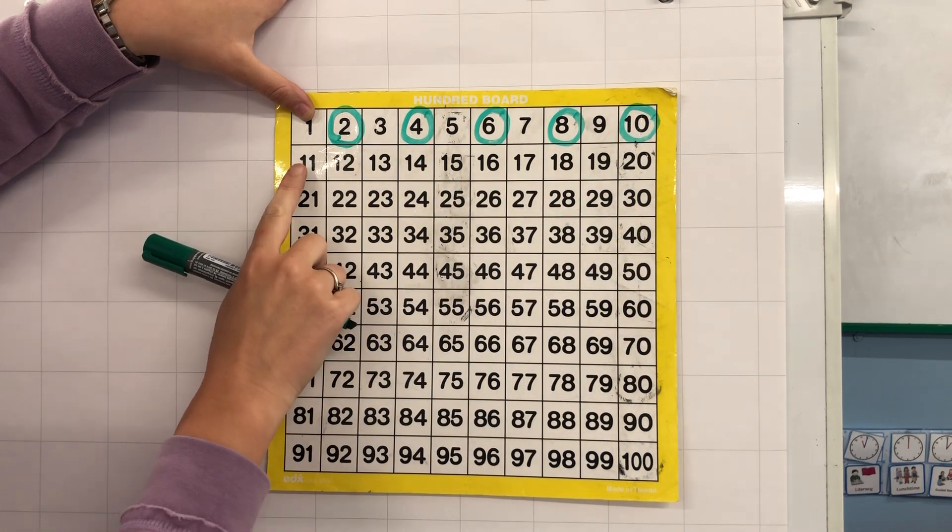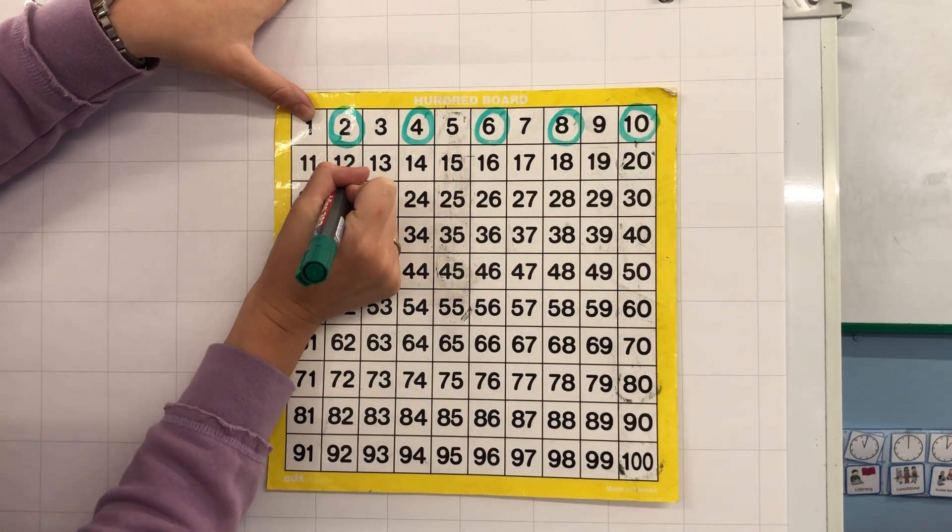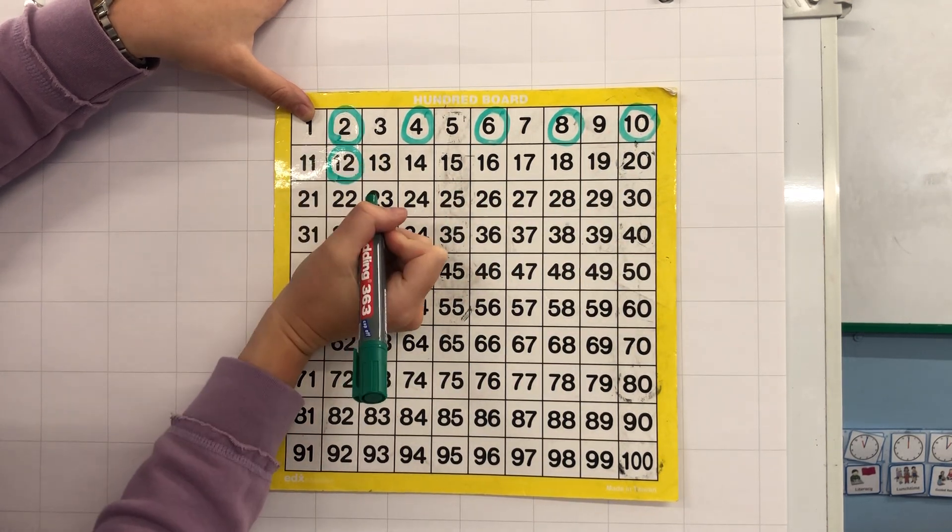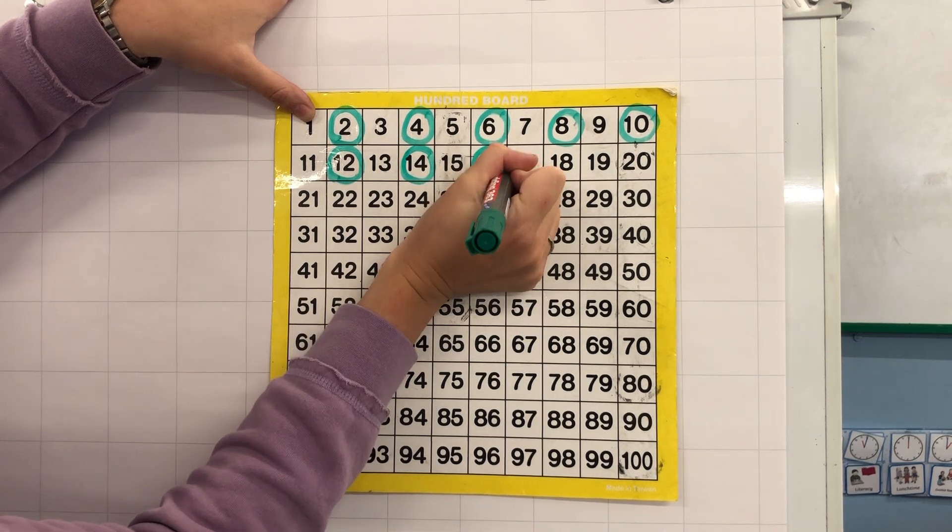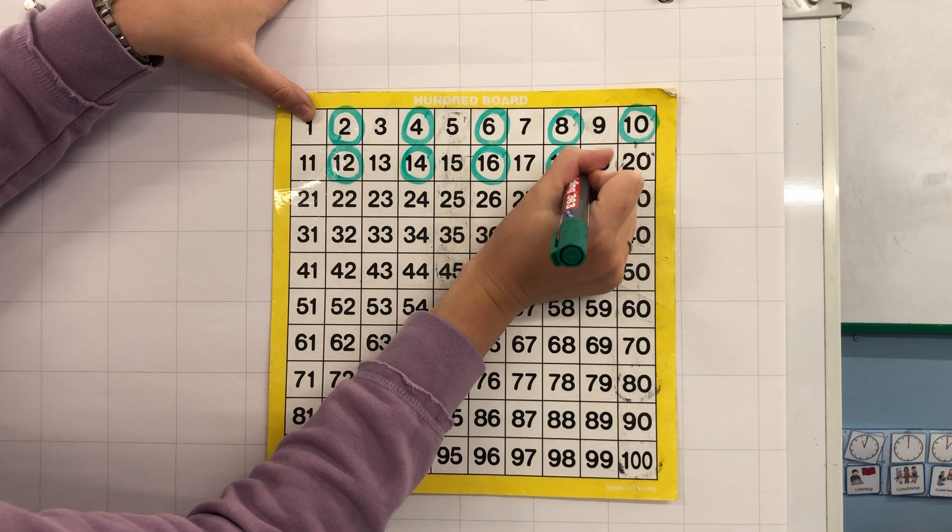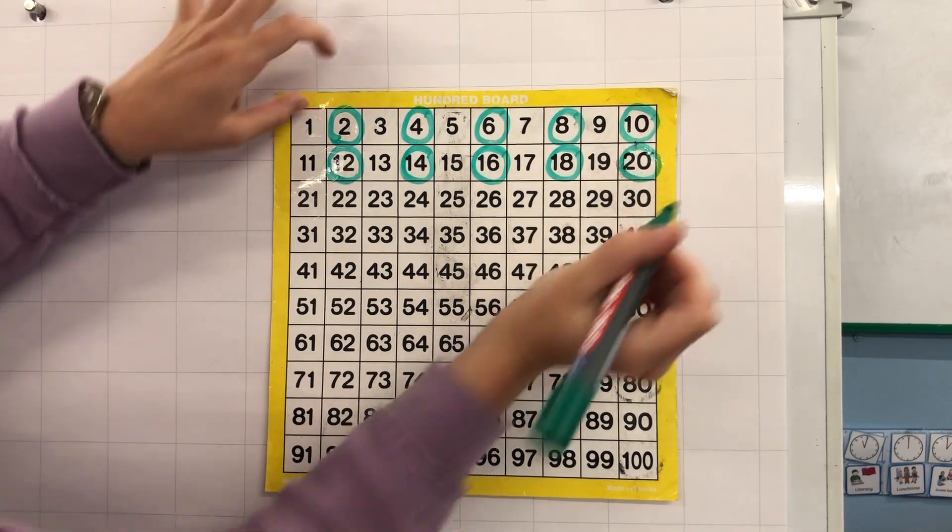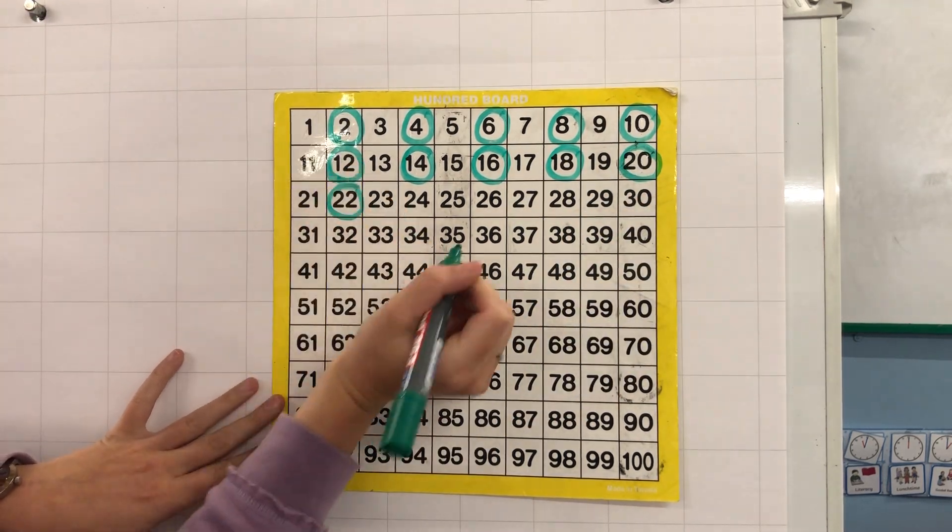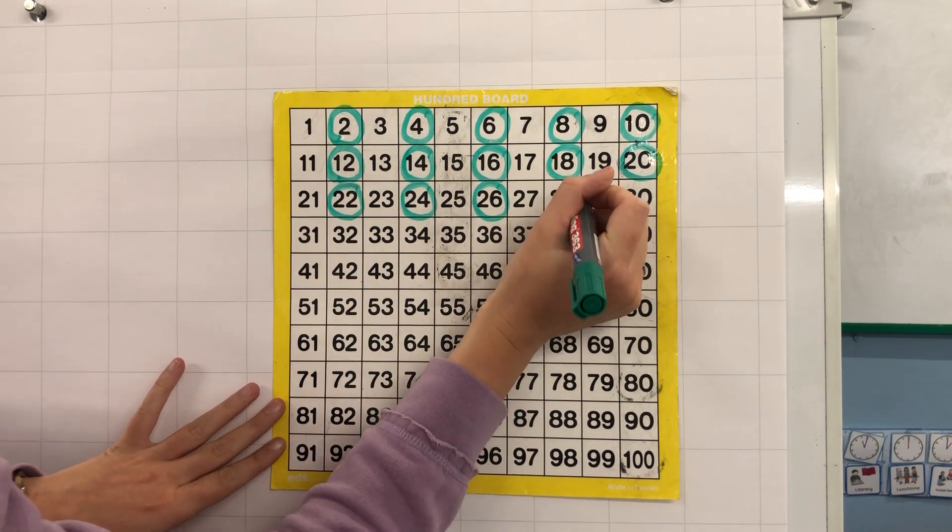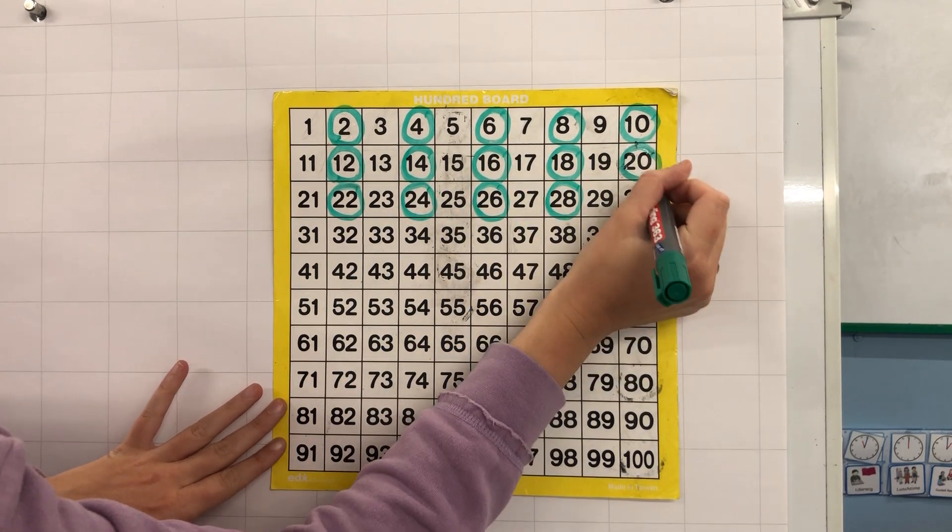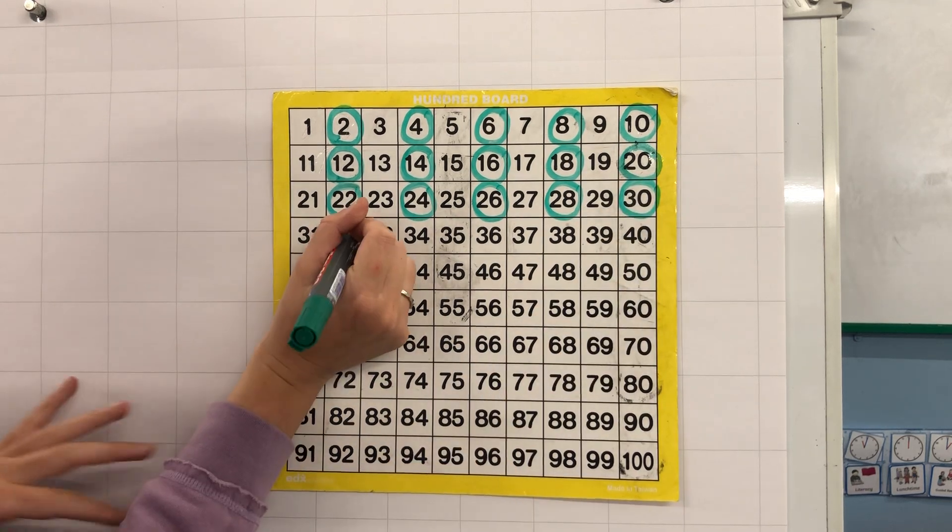I'm now going to miss 1 and I'm going to count 12, 14, 16, 18, 20, 22, 24, 26, 28, 30.